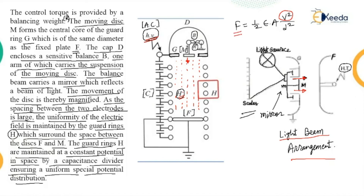By using this arrangement, the weight placed here is measured. Whatever force is developed here can do the measurement of the voltage which is applied to this system. The force between the two plates — with known quantities epsilon, A, and D (the gap between the two plates) — along with the force measurement, allows calculation of the voltage. From this expression, force is directly proportional to the voltage squared. This way, it measures the value of the force and hence the voltage given to the system. I hope you understood the concept of the electrostatic voltmeter with its basic principle, construction, and operation.